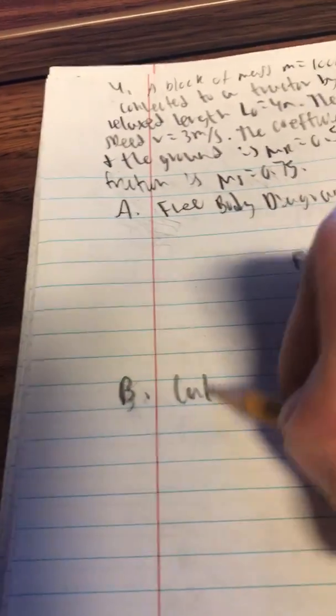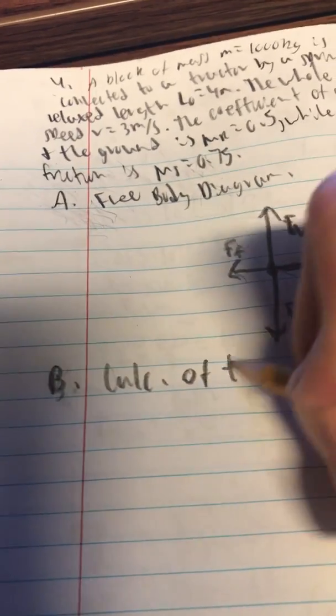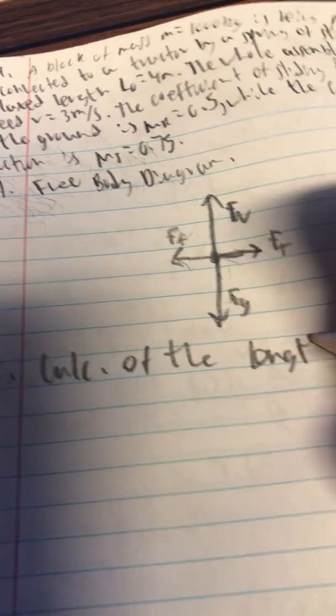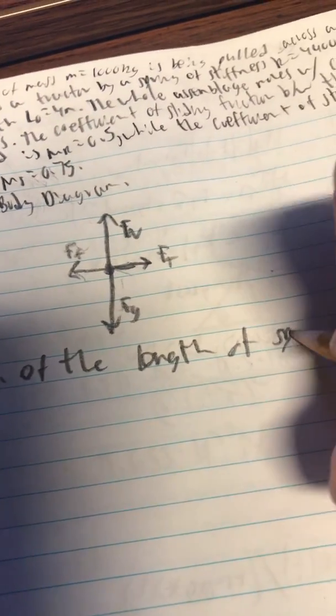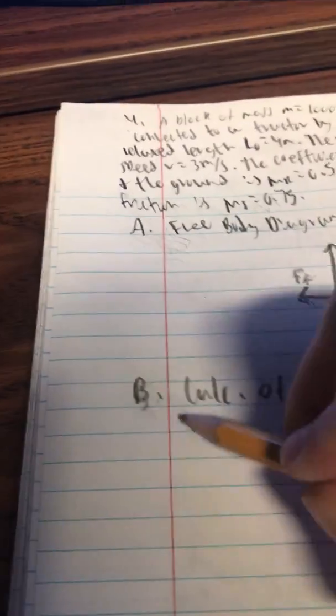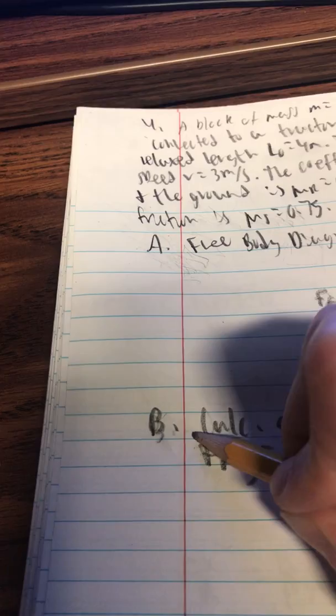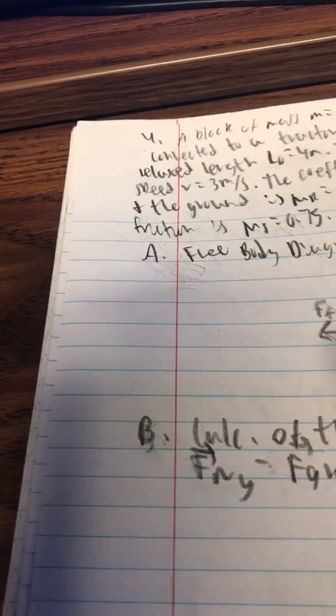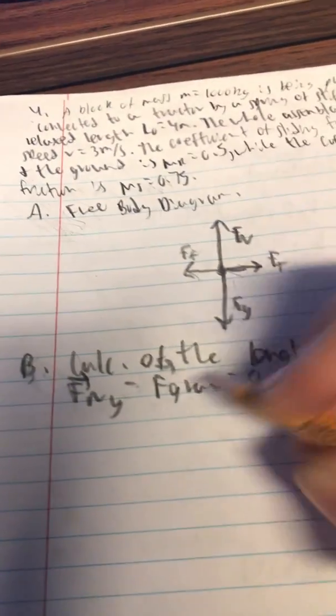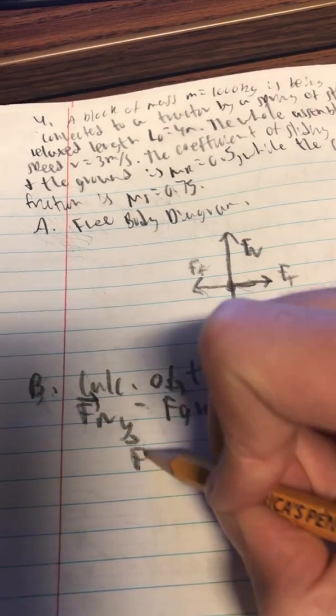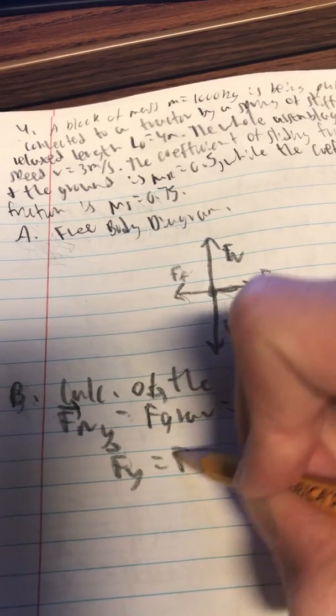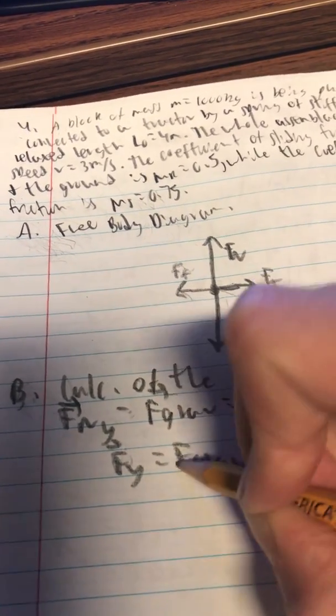So moving on to part B we're going to calculate the length of the spring. To start with that we'll have Fᵧ, the normal force in the y direction minus the force of gravity should be equal to 0 because the net force is 0. So the normal force should be equal to the force of gravity both in the y direction.